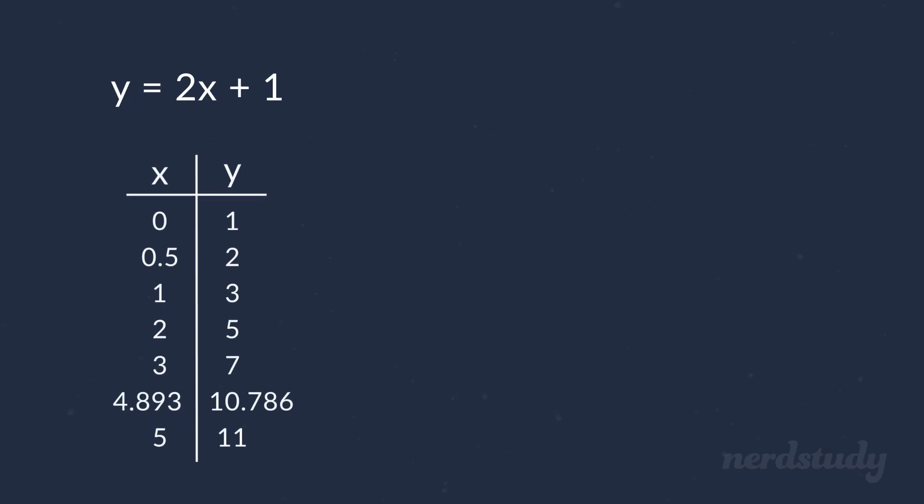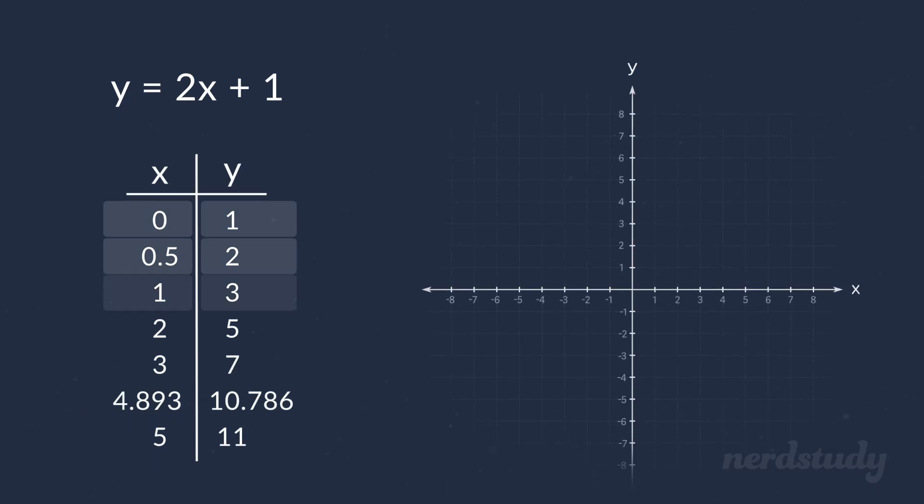To represent this information graphically, we can just take every single one of the points on the table of values and map them out on the graph. For example, we can plot this on the graph by looking for an x of zero and a y of one and plotting a point where the values meet. We can also map out this set of information onto the Cartesian plane by looking for the x of 0.5 and then looking for where it intersects with the y of 2 to plot out a point which is right over here.